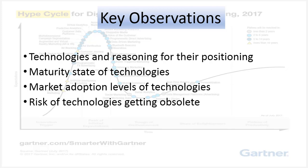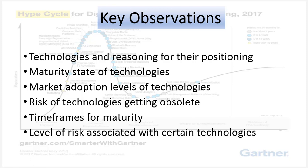Gartner doesn't place a specific technology in the fourth phase unless there is enough data regarding its maturity and stability. So if a technology is marked as obsolete, it most likely happens before it's placed in the fourth or fifth phase. In some cases, the report also gives an indication of time frames for which certain technologies may stay in a specific phase or before those technologies are expected to become mainstream. The report also mentions the level of risk that may be associated with adopting certain technologies depending on their position on the hype cycle, and knowing this level of risk can be useful for managers to make relevant decisions.